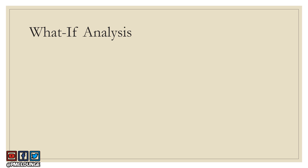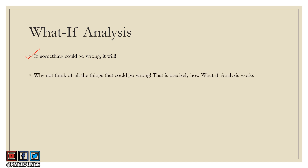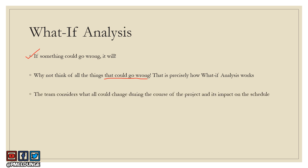The first tool we're going to discuss is what-if analysis. There's a famous quote that says if something could go wrong, it will. To counter this, you think of every single thing that could go wrong. Basically, you sit with your project team and consider everything that could change or go wrong during the course of your project, and what its impact is going to be on the schedule.